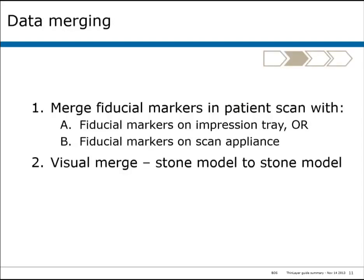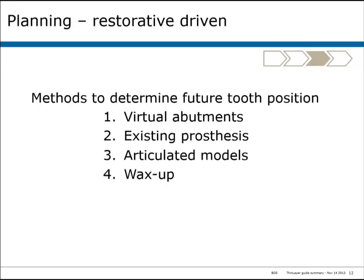Once acquired, the data has to be merged. The patient scan and the stone model scans can be merged on the basis of the fiducial markers on the impression tray or on the scan appliance. We merge multiple sets of stone models by doing visual merges of stone model to stone model.